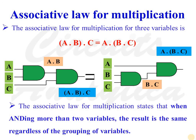Next is associative law for multiplication. The associative law for multiplication states that (A AND B) ANDed with C is equal to A AND (B AND C).